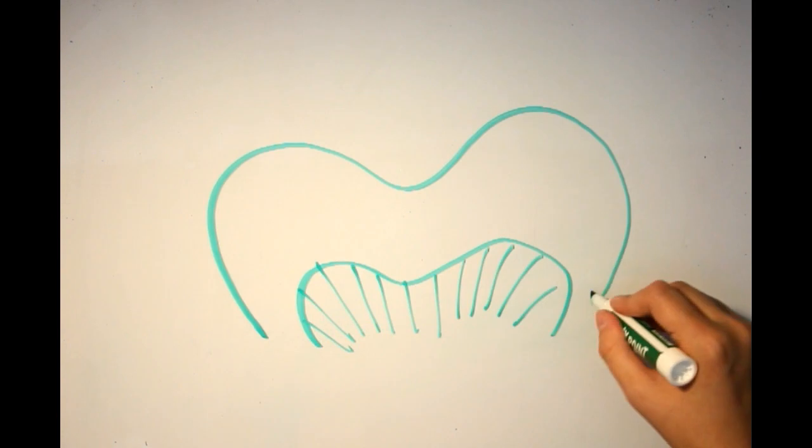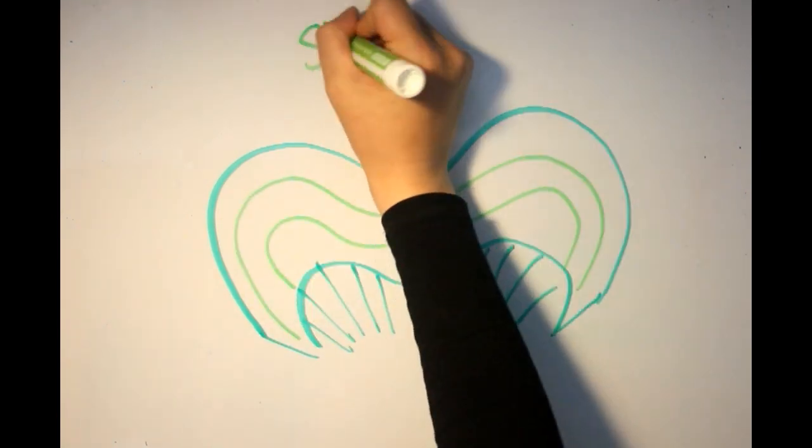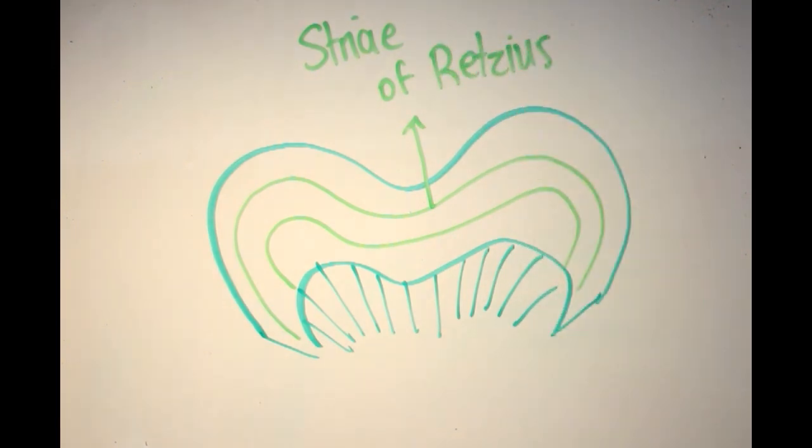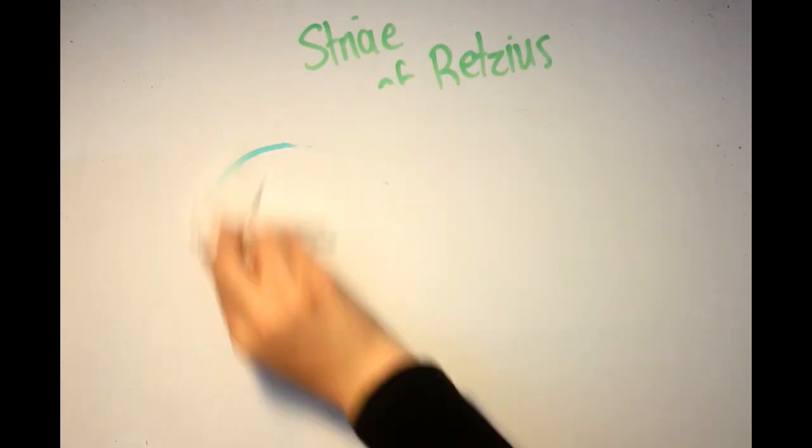Other features that you may see microscopically are stria of retzius, which are dark striations that run in a gospel direction. The exact reason why these lines are present is still unclear.